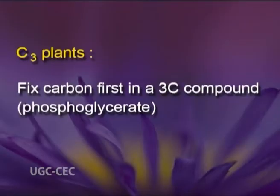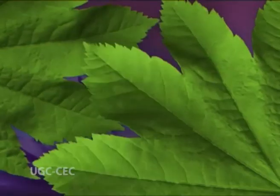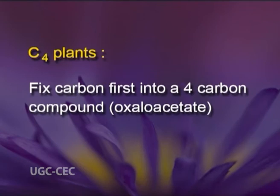C3 plants — the most common carbon fixation mechanism — fix carbon first into a C3 compound, that is phosphoglycerate, in the Calvin cycle. C4 plants fix carbon first into a 4-carbon compound oxaloacetate, which is then converted to a C3 compound to enter the Calvin cycle.